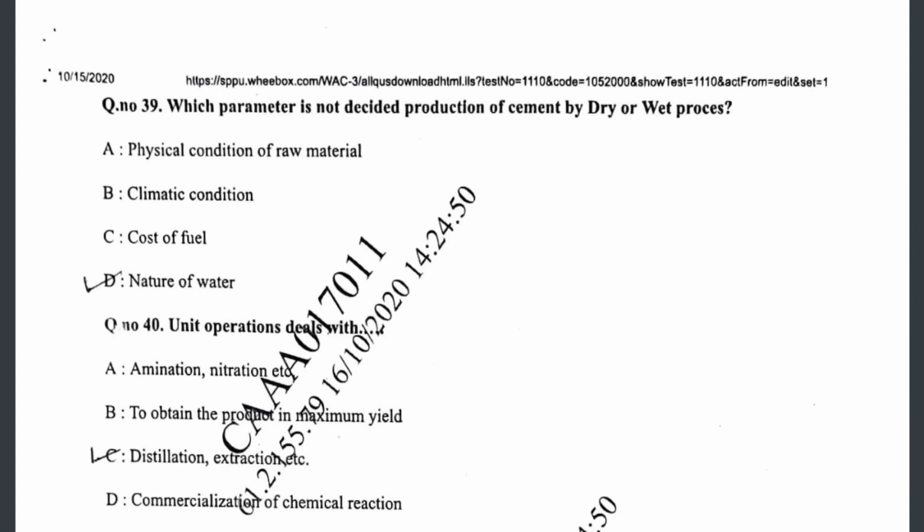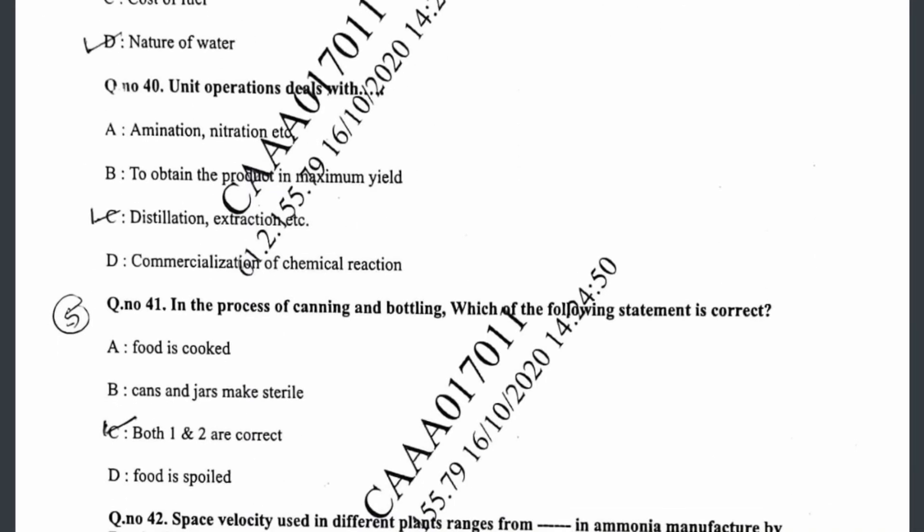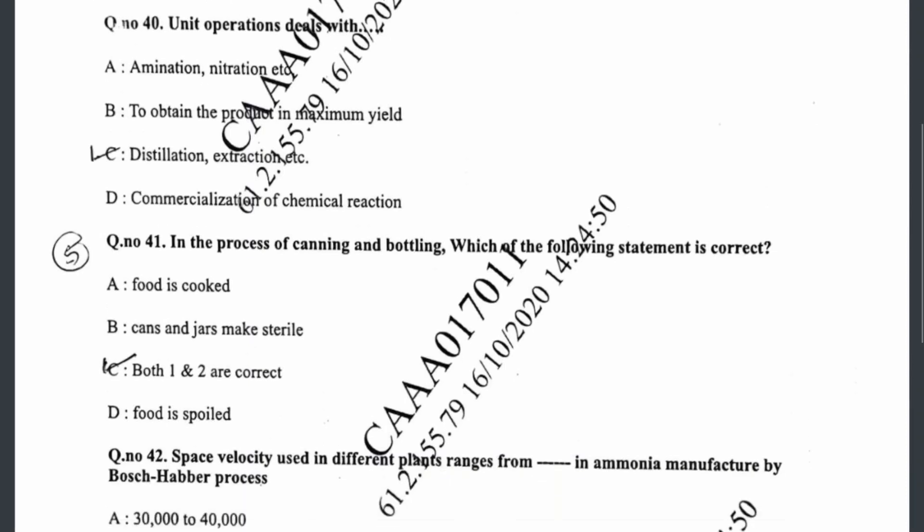Question thirty-eight (continued): which parameter does not decide production of cement by dry or wet process — that is the nature of water; all other three factors are deciding factors. Question thirty-nine: unit operations deal with distillation and extraction. Question thirty-nine (canning): in the process of canning and bottling, both A and B are correct — food is cooked, and cans and jars are made sterile.